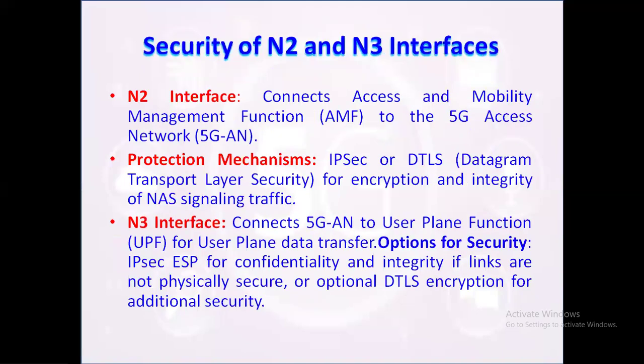The N2 and N3 interfaces in 5G connect critical network components, making their security paramount, especially when physical security cannot be guaranteed. The N2 interface between the AMF (access and mobility management function) and the 5G access network facilitates user and network signaling, while the N3 interface links the 5G AN to the user plane function (UPF) for data transfer. IPsec provides encryption, integrity, and authentication on both N2 and N3, protecting data in transit from potential interception.